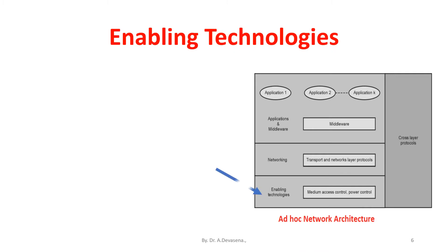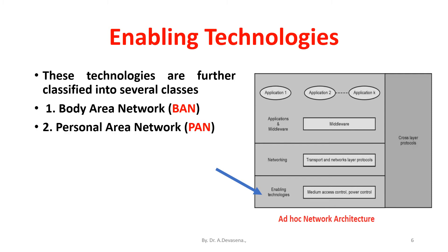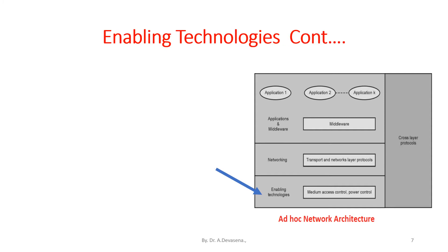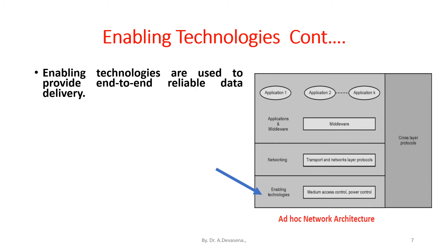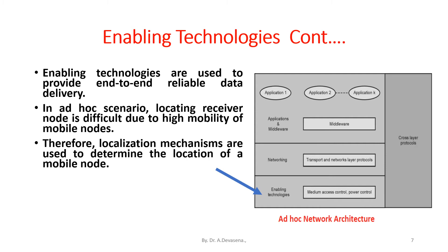Enabling technologies are further classified into several classes: body area network (BAN), personal area network (PAN), local area networks (LAN), metropolitan area networks (MAN), and wide area networks (WAN). Enabling technologies are used to provide end-to-end reliable data delivery in an Ad Hoc scenario. Locating a receiver node is difficult due to high mobility of mobile nodes, therefore localization mechanisms are used to determine the location of a mobile node.